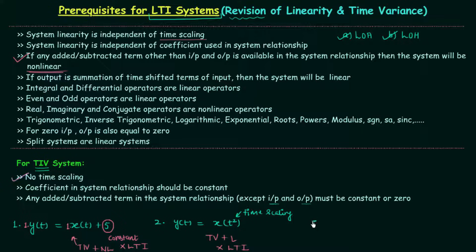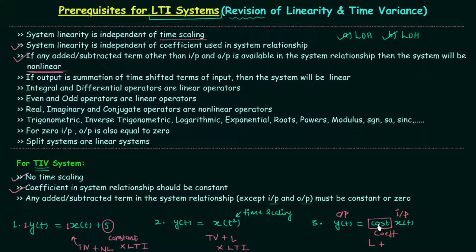In example three, y(t) = cos(t)·x(t). Here y is the output, x is the input, and cos(t) is the coefficient. According to the second property of linear systems, linearity is independent of the coefficient used in the system relationship, so the system is linear. However, checking the second condition for time invariance, the coefficient must be constant — but cos(t) is not constant because it depends on t, meaning the coefficient changes with time. Therefore the system is time variant, and again it is not a linear time invariant system.